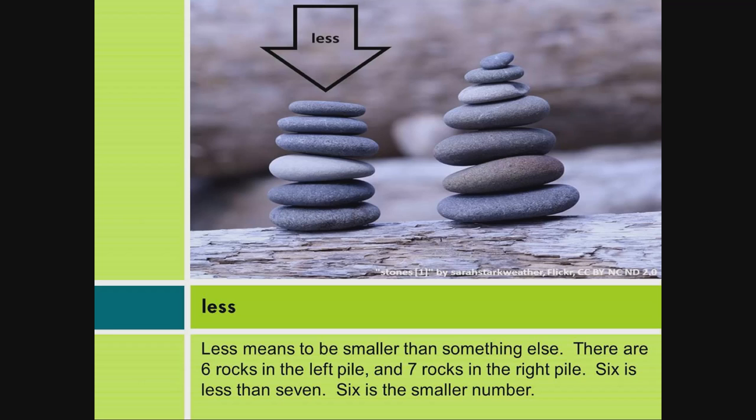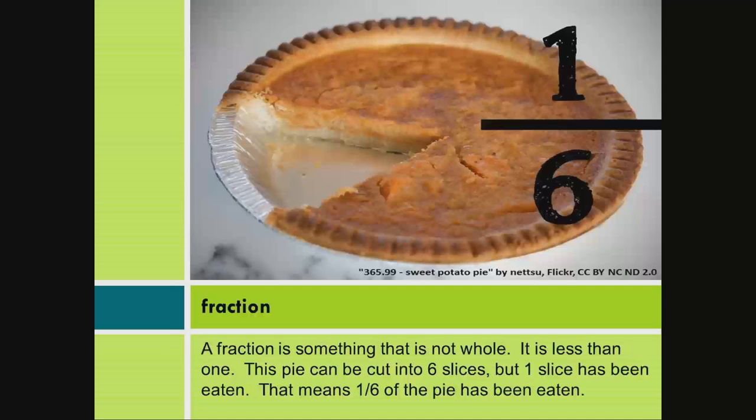Less. Less means to be smaller than something else. There are 6 rocks in the left pile, and 7 rocks in the right pile. 6 is less than 7. 6 is the smaller number.